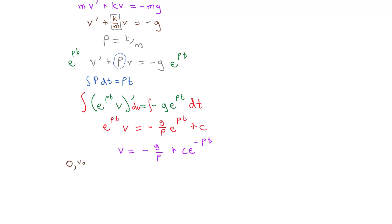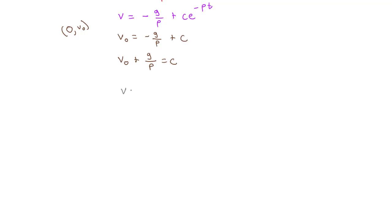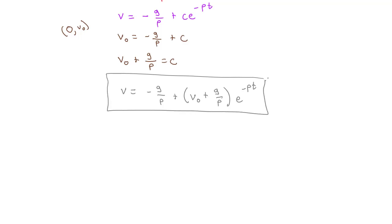Using the initial condition of zero initial velocity, the initial velocity equals -g/ρ plus the constant, so the constant equals v₀ + g/ρ. Putting it all together, the velocity equals -g/ρ plus (v₀ + g/ρ)·e^(-ρt). This gives us the equation for the velocity of our object as it drops to earth from the sky given air resistance.